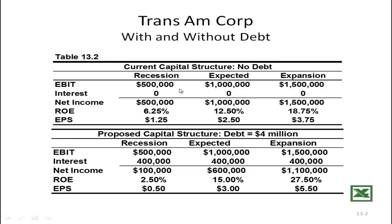Suppose there's a recession and EBIT is only $500,000 — half of what it was. Return on equity becomes $500,000 divided by $8 million, which is 6.25% — half of before. Earnings per share is $500,000 divided by 400,000 shares, which is $1.25. So half the EBIT gives half the EPS. If the economy is very good and EBIT is $1.5 million — 50% higher — return on equity is 50% higher and EPS rises from $2.50 to $3.75, also 50% higher. With no leverage, EBIT and EPS move by the same percentage.